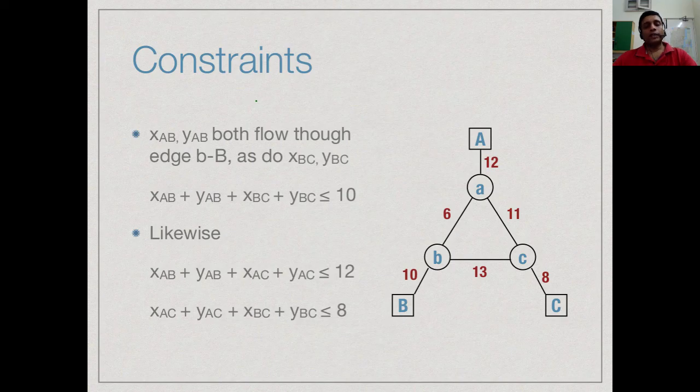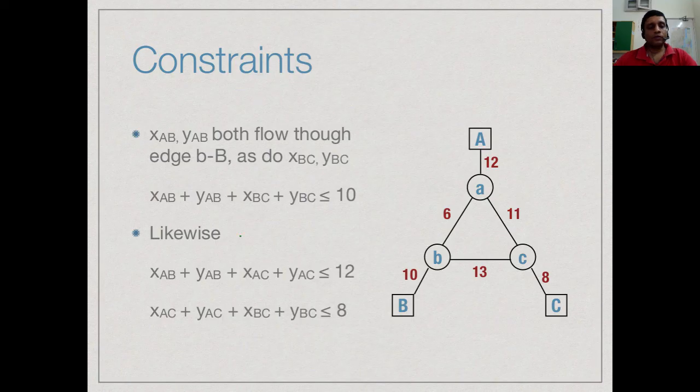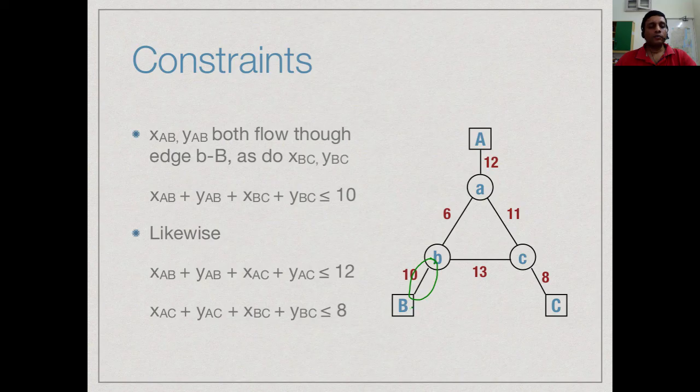Now, these variables are constrained by the capacities of our links. Supposing we look at this particular link, the link from small b to capital B. It has a capacity of 10.